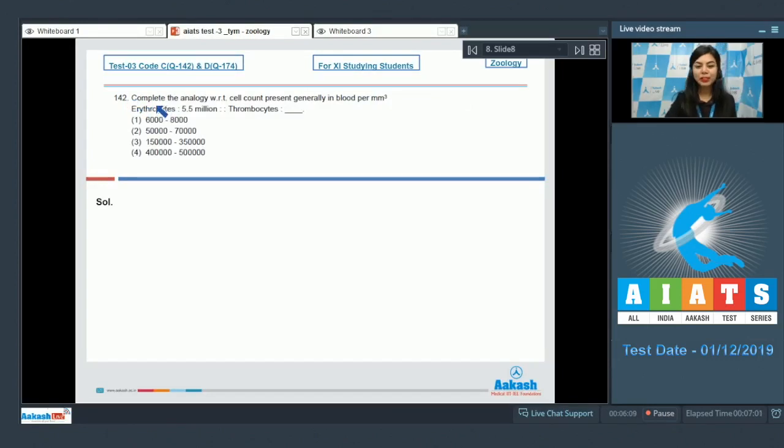Question number 142: Complete the analogy with respect to cell count present generally in blood per mm cube. Erythrocytes: 5 to 5.5 million, thrombocytes: dash. With respect to the cell count in blood per mm cube, students, RBCs as given is five to five point five millions.